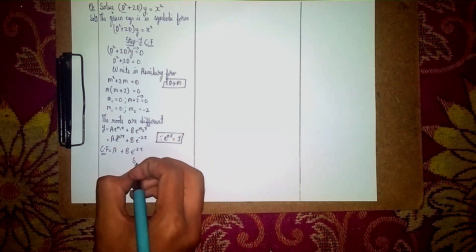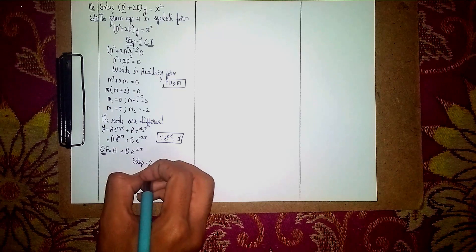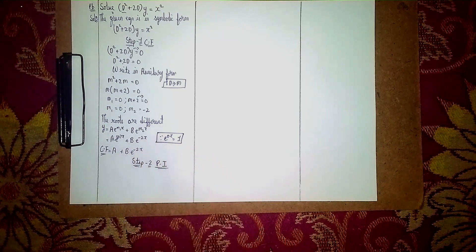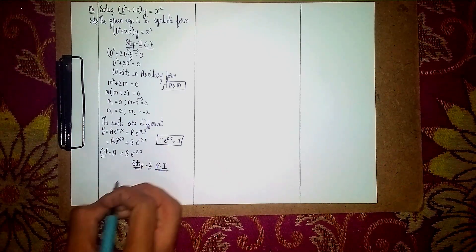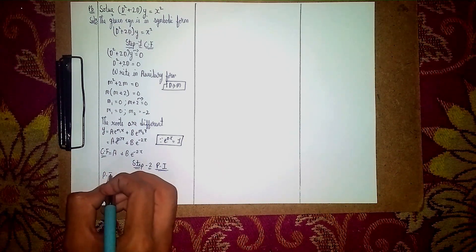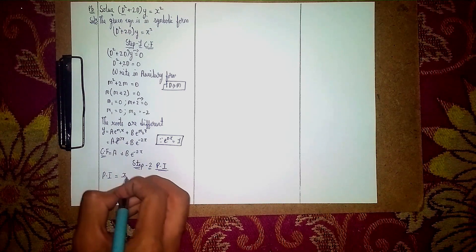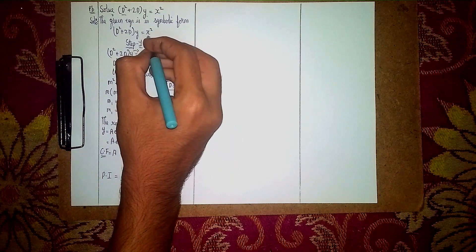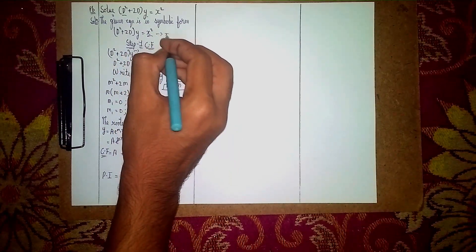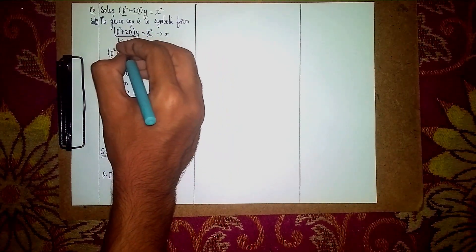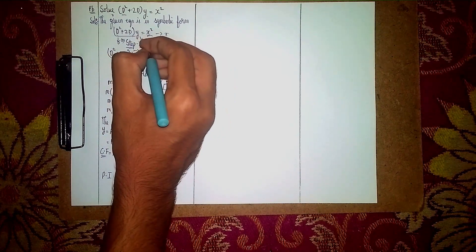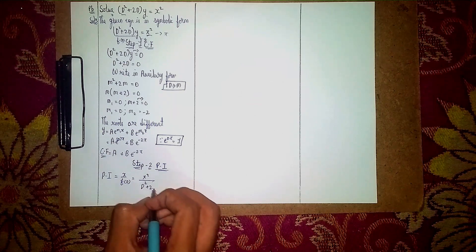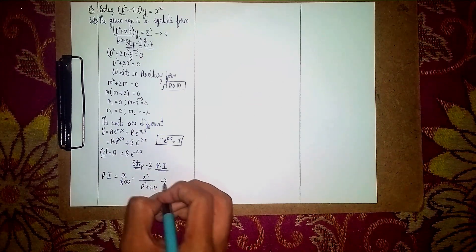Step 2 is to find the Particular Integral (PI). The PI formula is: PI = x / f(D), where x here is x² (the RHS function), and f(D) = D² + 2D. So PI = x² / (D² + 2D).